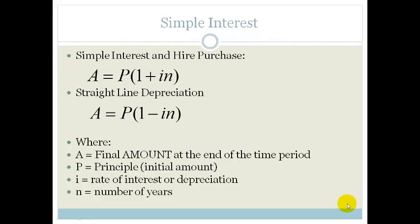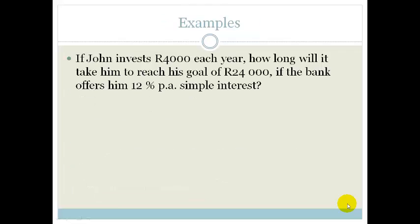So, let's do an example to remind us what's going on here. If John invests 4,000 Rand each year, how long will it take him to reach his goal of 24,000 Rand if the bank offers him 12% per annum simple interest? Okay. So, we know that A equals P times 1 plus IN. So, what do we want? We want to know, we've got that his principal, the amount of money invested, is 4,000 Rand.